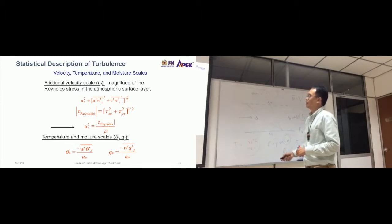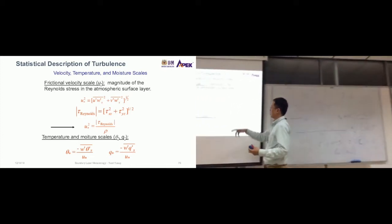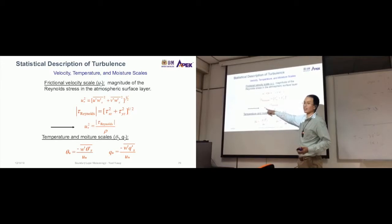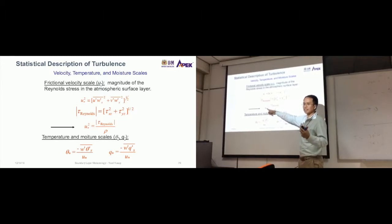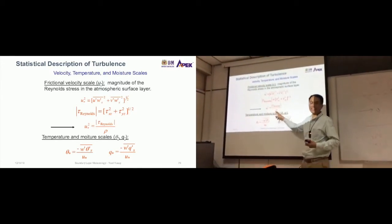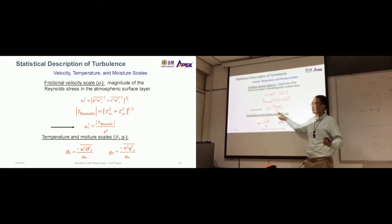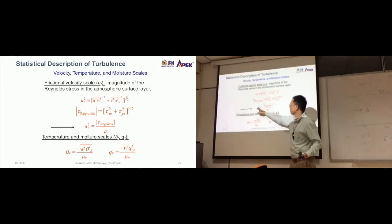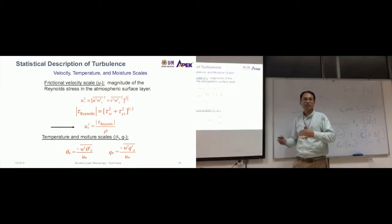This component is the same as this component. You want to get this one—you can calculate this from sensors, from the anemometer. This one is air density, about 1.02 kilograms per meter cubed, so this is a constant. This one multiply this one you can get from sensor, you can get the approximation of Reynolds stress, and this one can quantify the degree of friction of the surface.